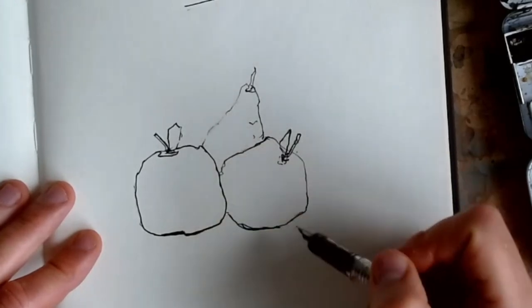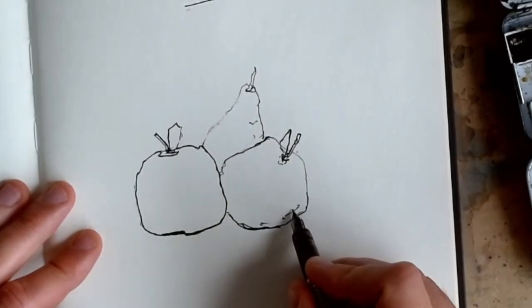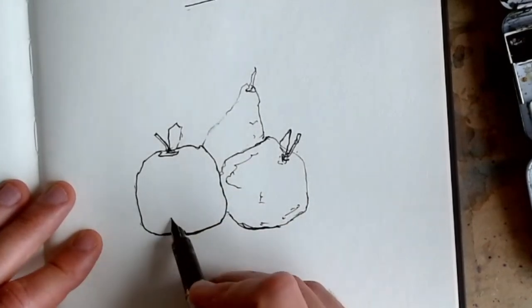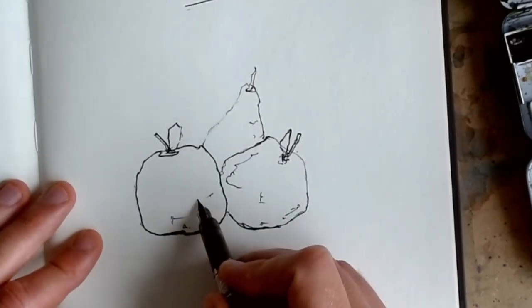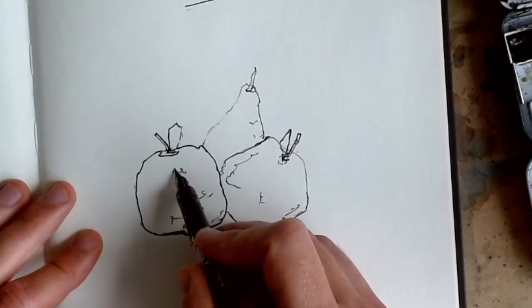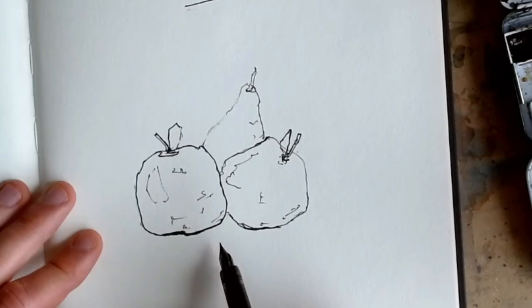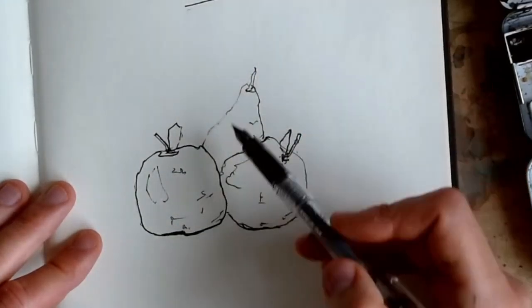Then the pear we just leave as it is and then we can come in and add a few more sort of textual lines. We could suggest a little reflection there. And all these things just building on this really basic idea.